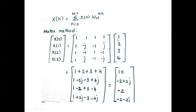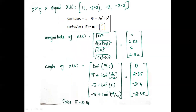We take the first row and multiply with the input column, then the second row, the third row, and the fourth row. After completing all multiplications, the result is: X(K) = [10, -2+2j, -2, -2-2j].